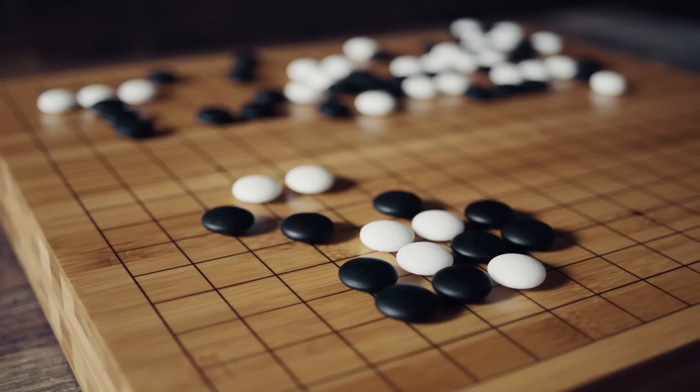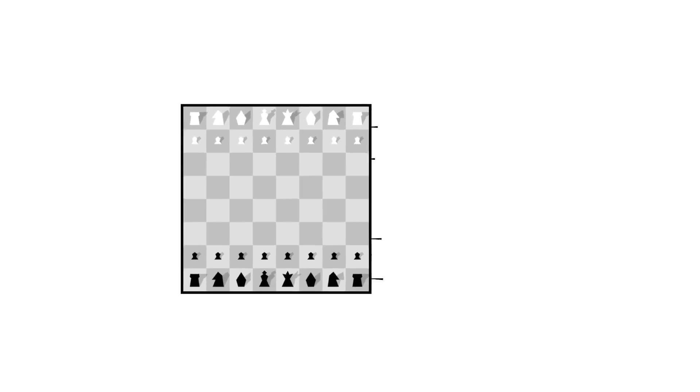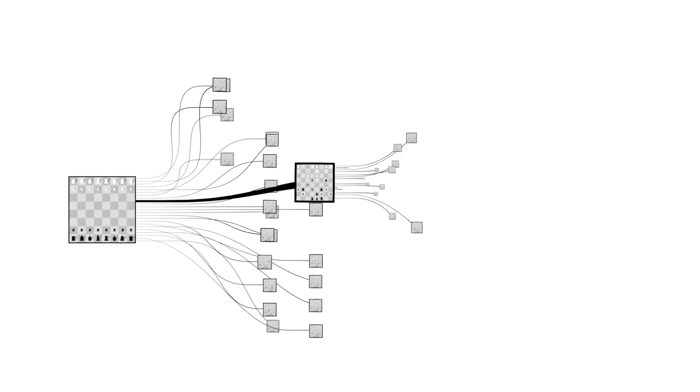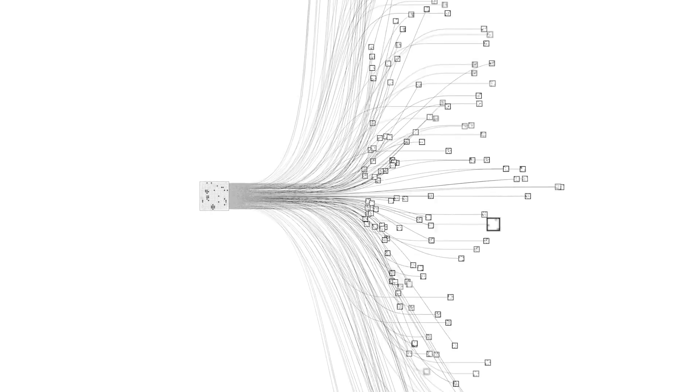Go is, simply put, complex. In chess, there are 20 possible moves per turn. For Go, it's about 200.